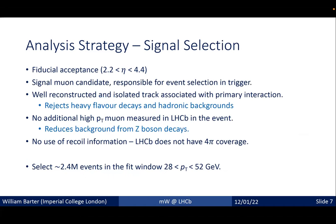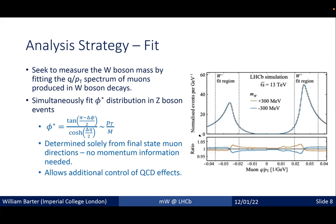Our selection is quite simple. We have a pseudorapidity acceptance corresponding to our detector coverage, based around a single muon candidate responsible for selecting the event in the trigger. This candidate needs to be well-reconstructed, isolated, and associated with the primary interaction — which lets us reject heavy flavor decays and hadronic backgrounds. We don't want additional high transverse momentum muons, which reduces Z boson backgrounds. We don't use recoil information, and our fit window is between 28 and 52 GeV in lepton p_T, corresponding to about 2.4 million events.